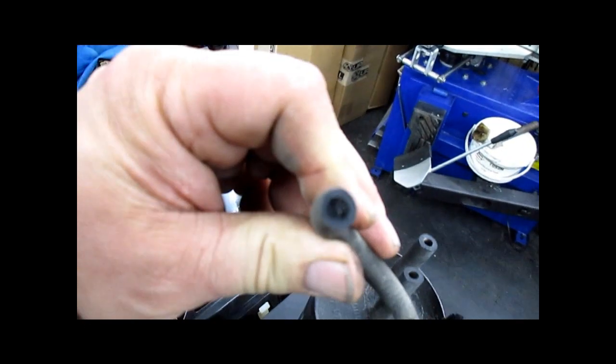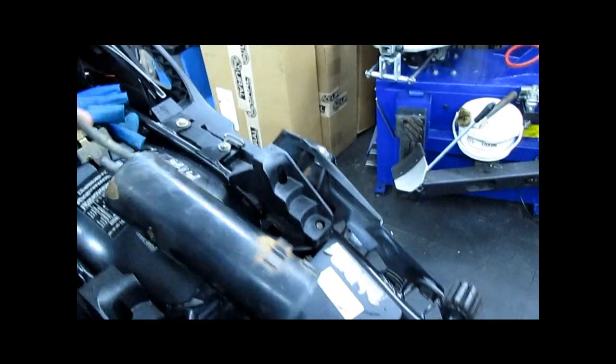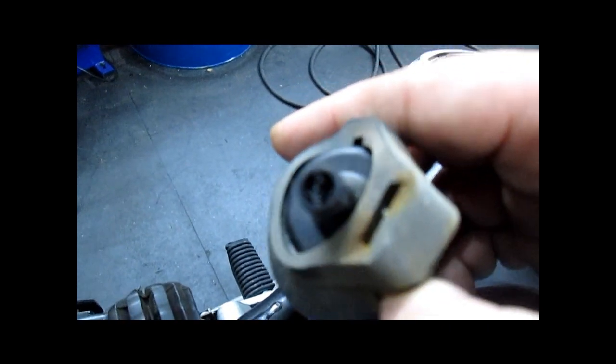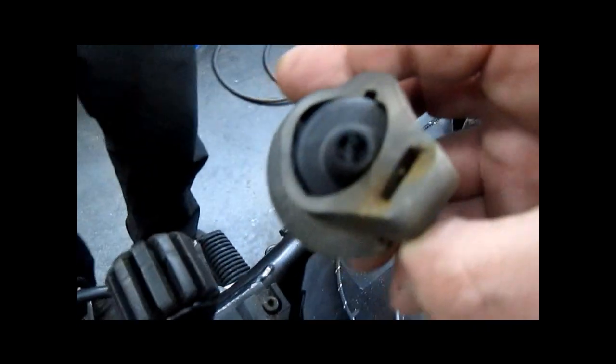Here's a charcoal canister that has charcoal in the line that has made it from here all the way across here, over to the freaking purge valve which also has charcoal in it.